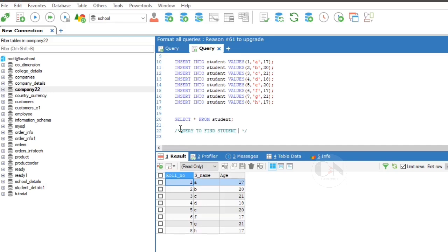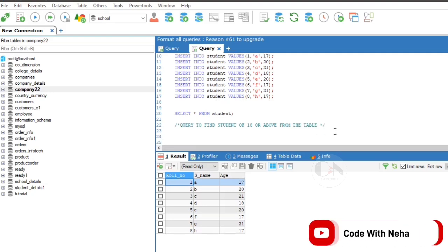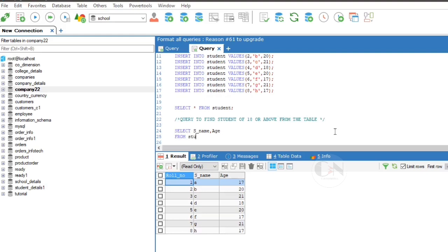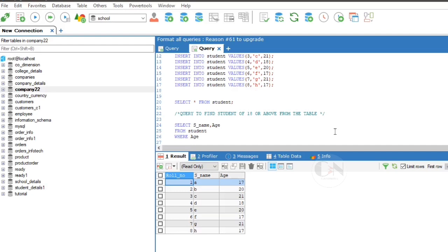So the first query is query to find student of age 18 or above from the table. Here is a simple application of where clause. So the query will be select s name, age from student where age is greater than or equals to 18. Execute the query to see the result.